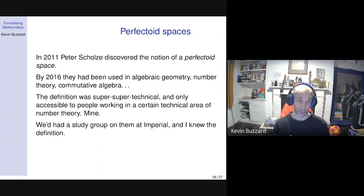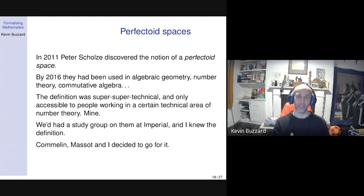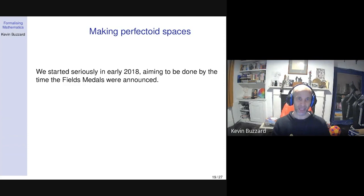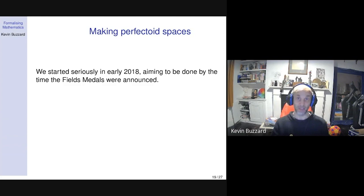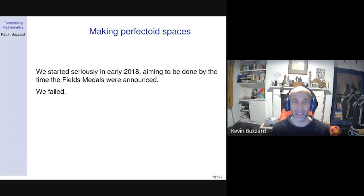I'm the expert on perfectoid spaces at Imperial College London. We'd organized a study group in 2013 — me and other expert number theorists at Imperial, and people at King's as well, a London study group — and we'd really carefully read a lot of Scholze's work. I knew this work very well. I knew full well that we could do this stuff in Lean. So we decided to go for it and formalize the perfectoid space. We had a deadline: by 2018, the Fields Medals were going to be announced. There'd be a lot of noise about perfectoid spaces all over the popular math literature. So we had a deadline — and we failed to meet it.